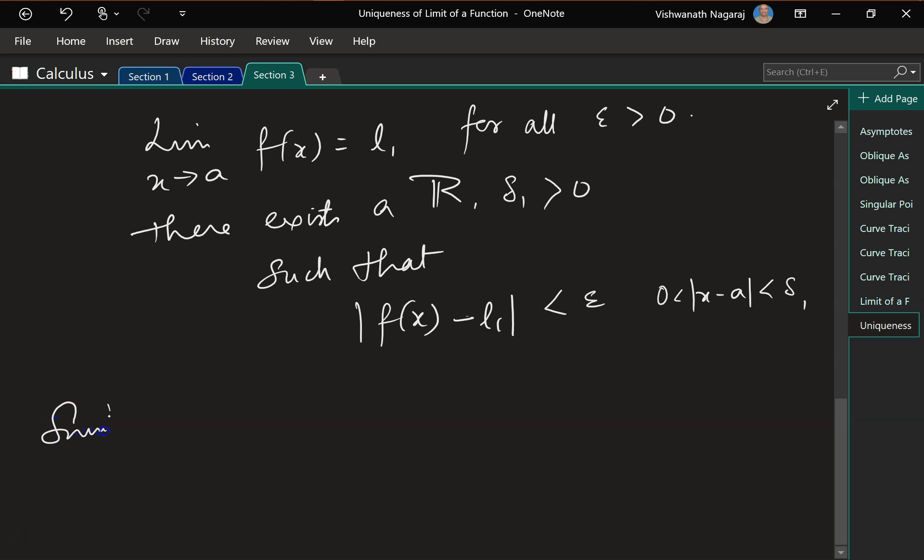And let's say, similarly, f of x, the distance between f of x and l2 is less than epsilon, whenever x minus a, the distance between these two is between 0 and delta 2.